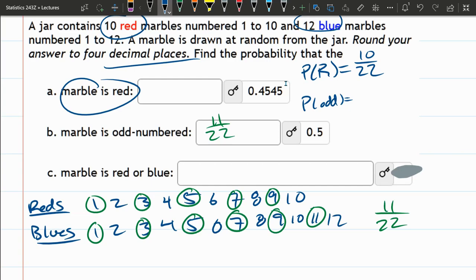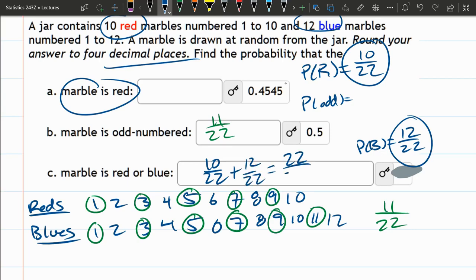You could think about probability of red and then the probability of blue. Probability of blue is 12 out of 22, and you would add 10 out of 22, 12 out of 22. Add those up, you would have 22 out of 22, which reduces to 1.